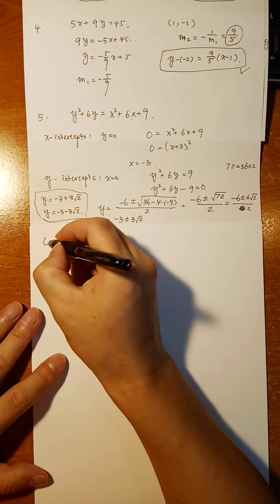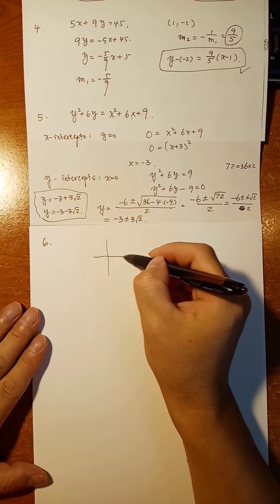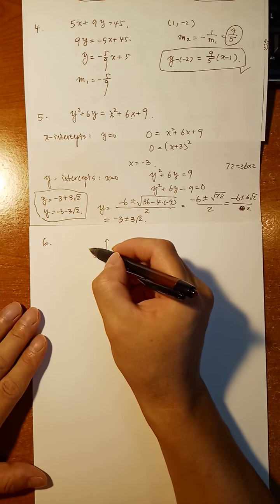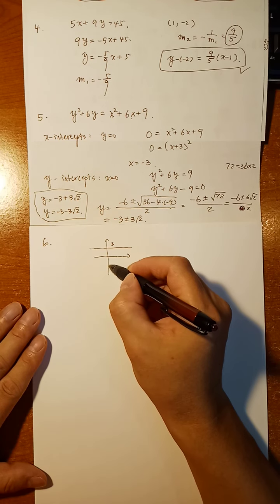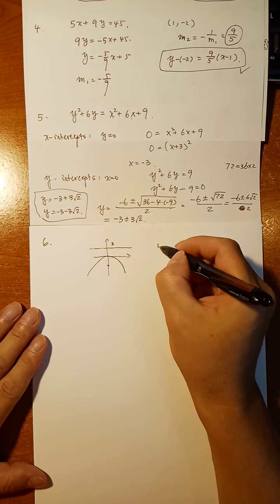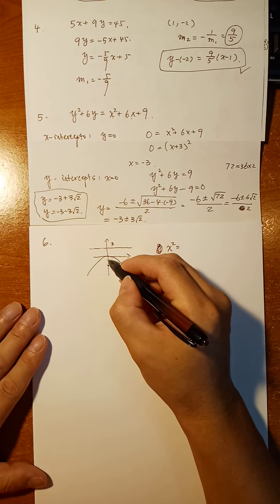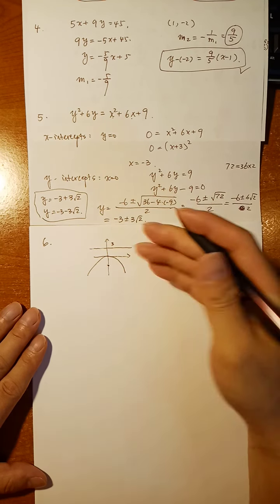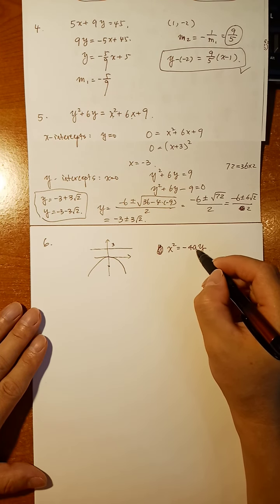Problem 6: we have a parabola with directrix y equals 3 and focus at (0, negative 3). The focus is below the directrix, so the parabola opens in the negative y direction. The equation is x squared equals negative 4ay, where a is always positive. Since the focus is at negative 3, we identify negative a equals negative 3, so a equals 3.